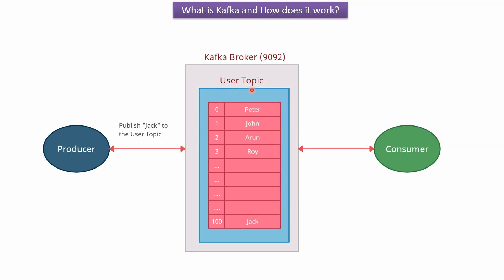Here you can see the user topic inside the Kafka broker. In the user topic, we can store usernames. Suppose the producer publishes the username Peter to the user topic — the name Peter will be stored in the user topic at index position zero. Next, the producer publishes username John to the user topic, and John will be stored at index position one.